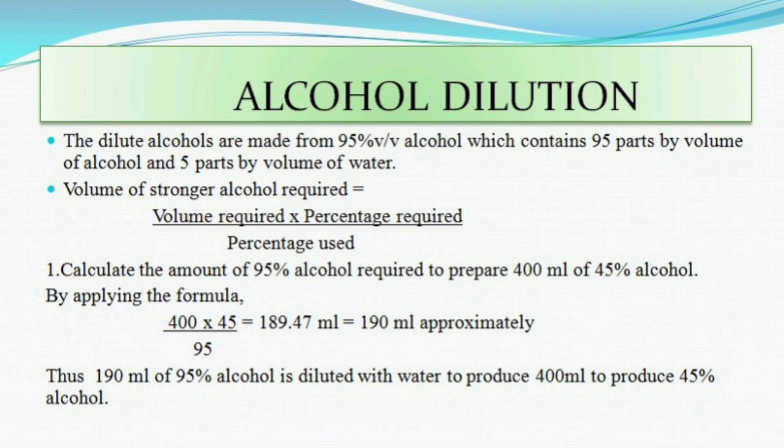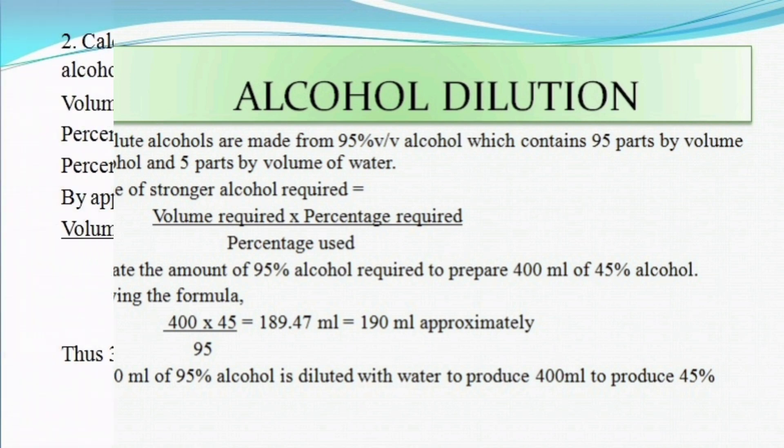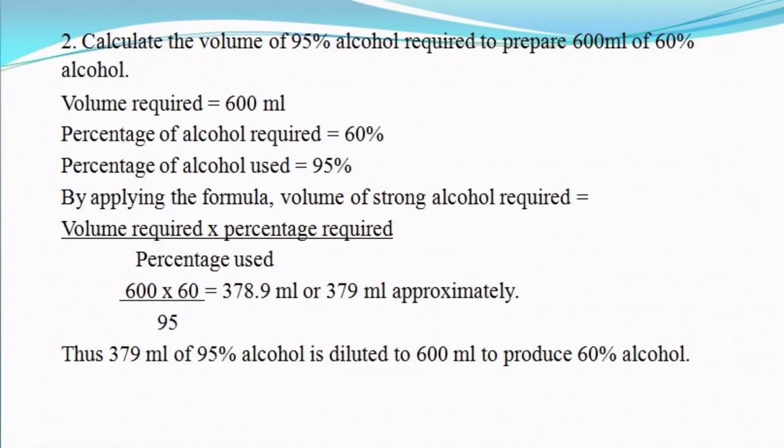We will make up the remainder with water. So take 190 ml of alcohol and add the remaining water — make up to 400 ml with 210 ml of water — to get 400 ml of 45% alcohol.